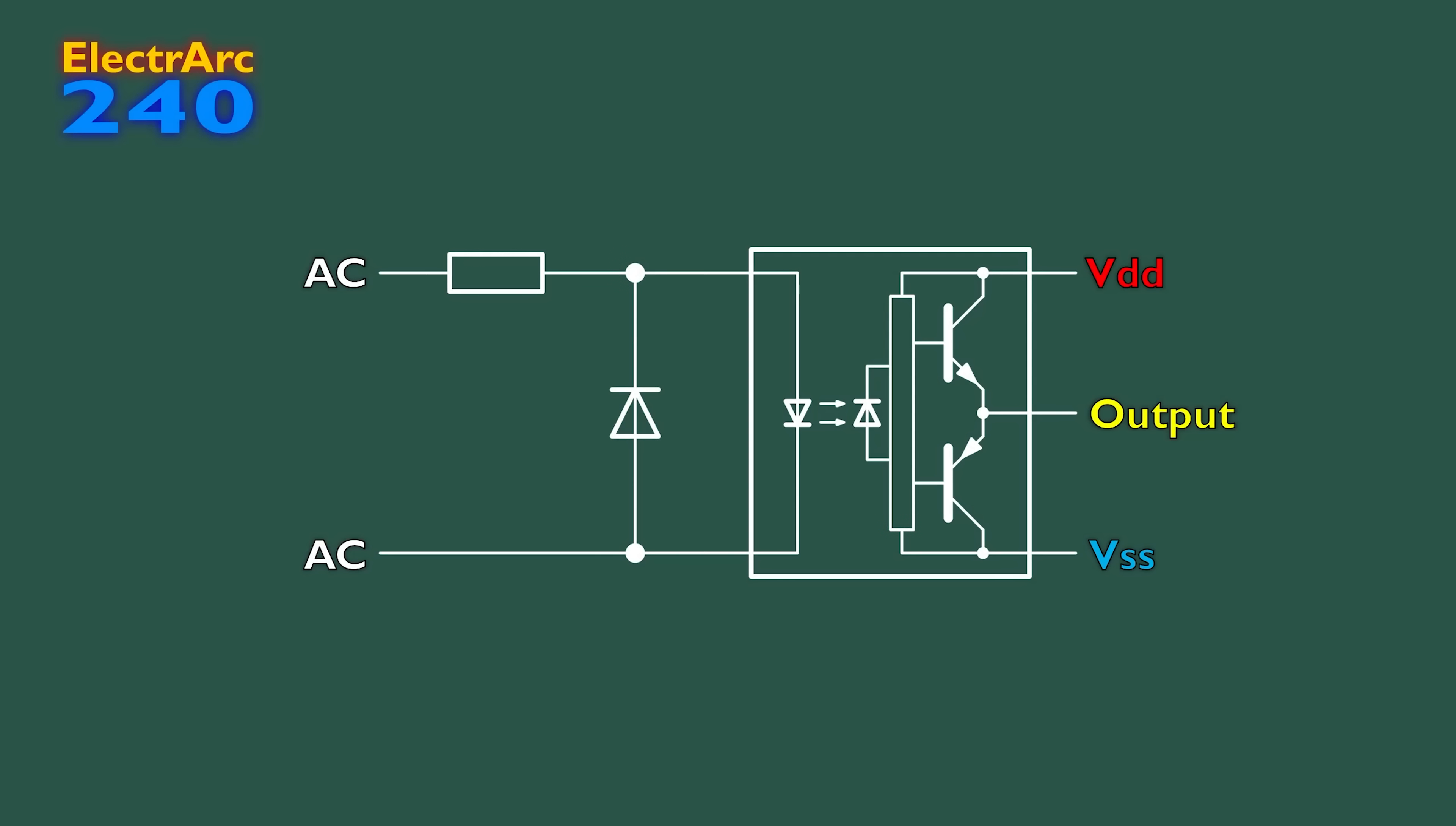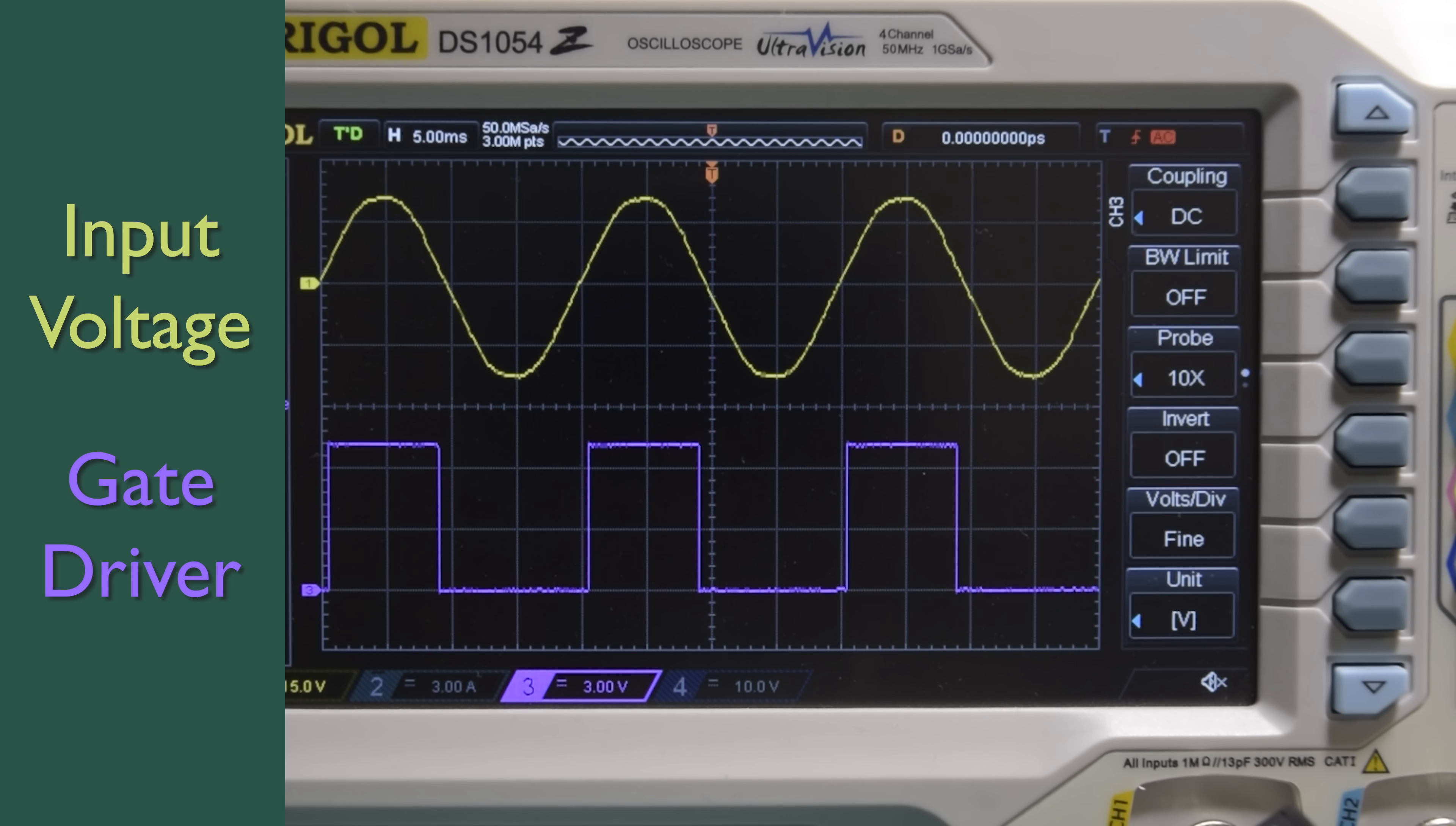To detect the polarity of the voltage, I've made this circuit using an optically isolated gate driver. When the AC voltage is positive, current will flow through the internal LED of the optocouple, turning the output on. When the voltage goes negative, the LED and the output will turn off. I've added this diode to limit the reverse voltage seen by the LED, as these usually can't block more than a few volts without risking damage. Here you can see the output of the gate driver, which is a simple digital signal synchronised with the grid voltage.